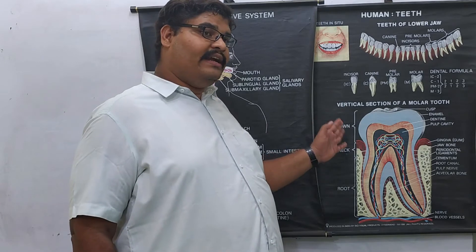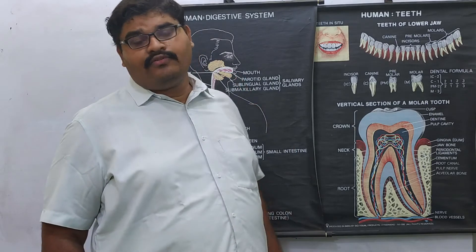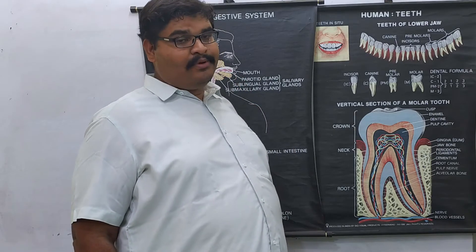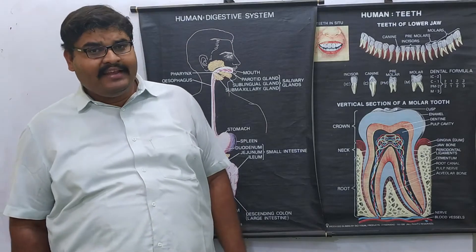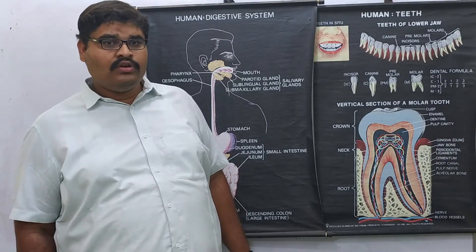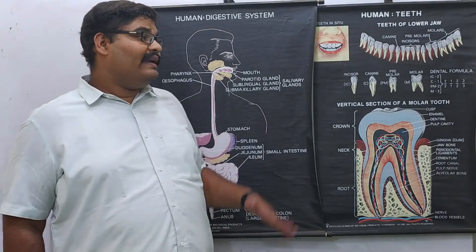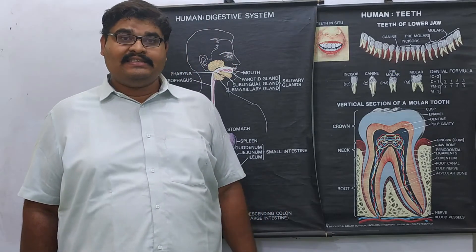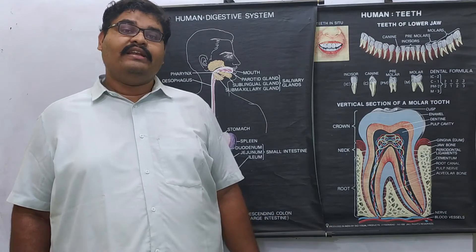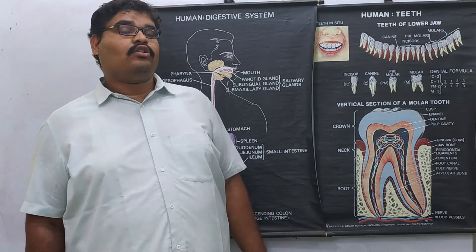Humans have two sets of teeth — the first set is milk teeth or temporary teeth, also called deciduous teeth, which can fall off. The second set is the permanent teeth, which may last 70, 80, or 90 years. This condition of having two sets of teeth is called diphyodont.